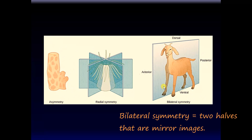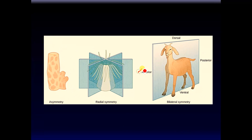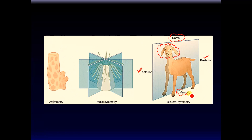Bilateral symmetry means the animal can be cut into two mirror-image halves. The front end is called the anterior end and the back end is called the posterior end. Most important sense organs for survival are concentrated in the anterior end — a more efficient use of senses. The back side is called the dorsal end and the tummy side is called the ventral end. We should familiarize ourselves with anterior, posterior, dorsal, and ventral aspects of a bilaterally symmetrical living thing.